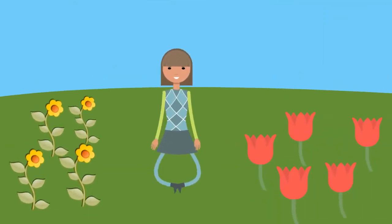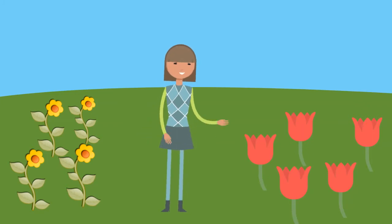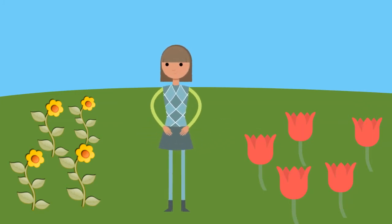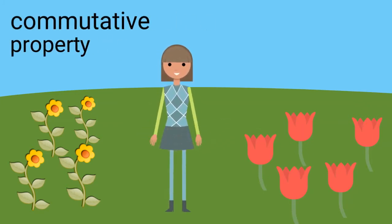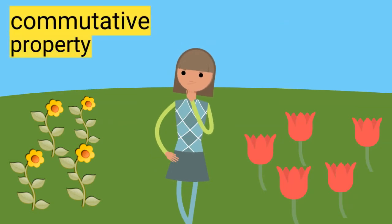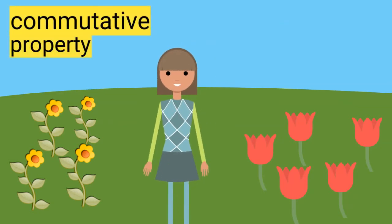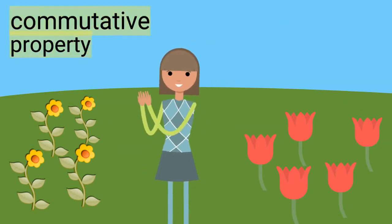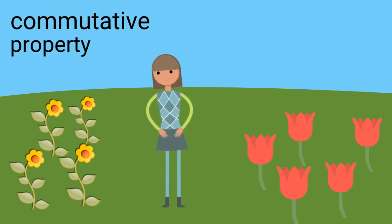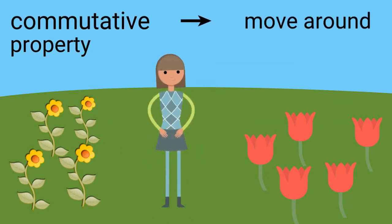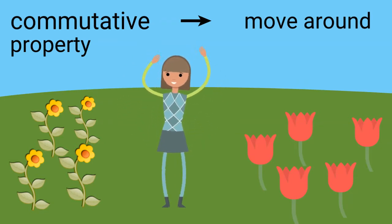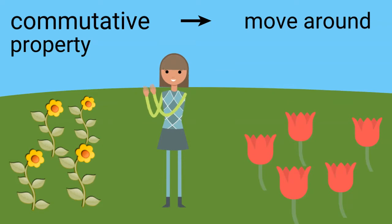What a nice day! We can use these flowers to learn about addition properties. First, let's talk about the commutative property. Can you say commutative property? Nice! The word commutative is from commute, which means to move around. When we use the commutative property, we move numbers around. Let's try using this property by moving numbers around.